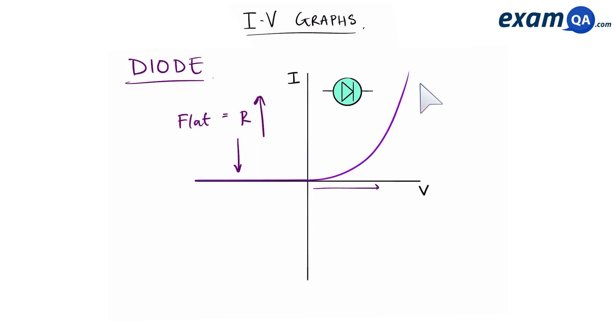On the other side, you can see that as the voltage begins to increase, the gradient becomes larger and larger, and the line is heading upwards. That means that the resistance is reducing. So a diode is a component that, in one direction, has got a very high resistance, whereas in the other direction, the resistance is very low. So it only allows current to flow in one direction.